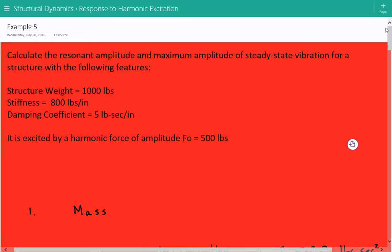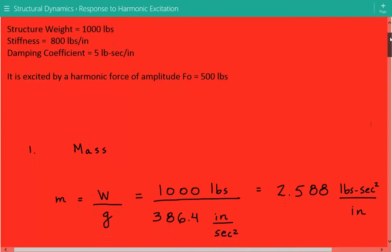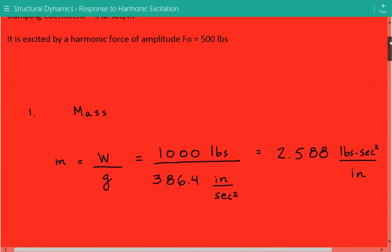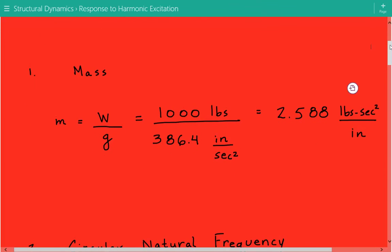Now coming back to our dynamics problem, the first thing we'll calculate is the mass of this structure, which equals the weight divided by gravitational acceleration. So the mass equals 2.588 pounds second squared per inch.